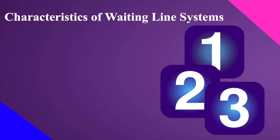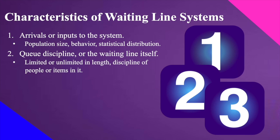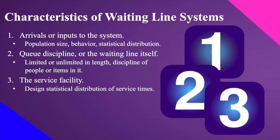The different characteristics of waiting line systems include: first, arrivals or input to the system — covering population size, behavior, and statistical distribution, primarily the Poisson distribution. Second, queue discipline or the waiting line itself — which can be limited or unlimited in length, with various disciplines for people or items. Third, the service facility — described by the statistical distribution of service times.